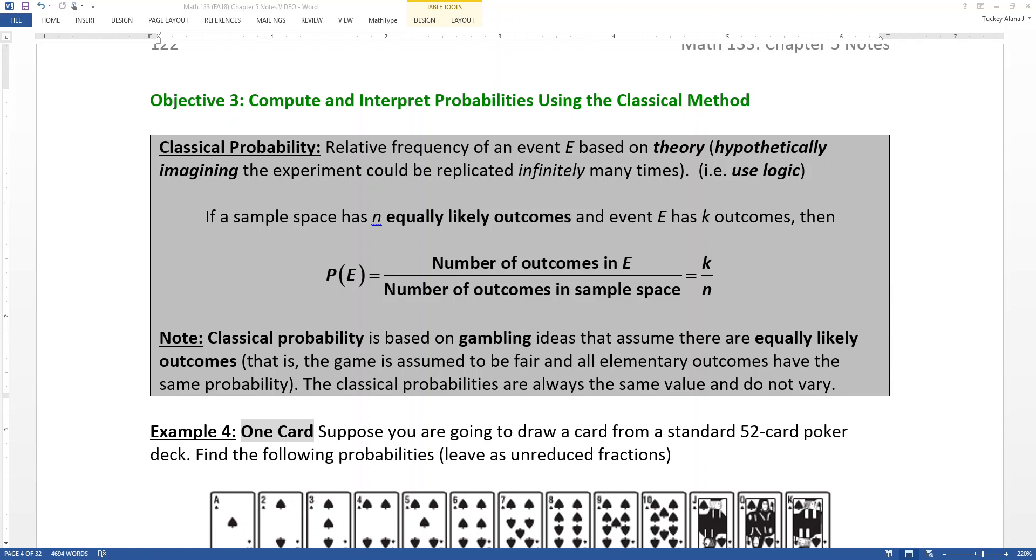So we know about empirical probability, which is calculated from data. You look at data, you look at real-life experiments, things you can see and smell and touch, and you create numbers off of that that you can find probabilities from. But now we want to look at the other big kind of probability, the other main method we're going to use, which is the classical method.